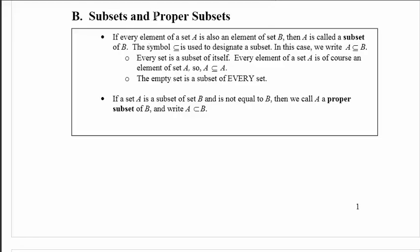If every element of set A is also an element of set B, then A is called a subset of B. And this is the symbol that we use to designate a subset. It looks like a symbol with the letter C with a bar underneath it. That would be a subset symbol.